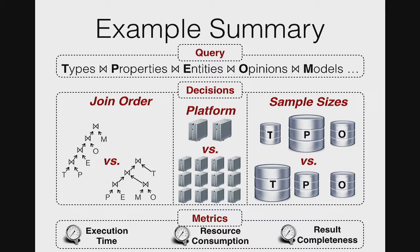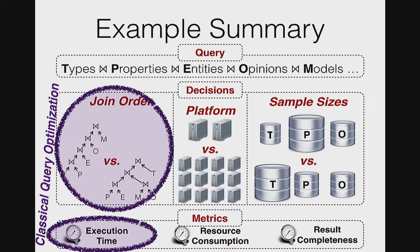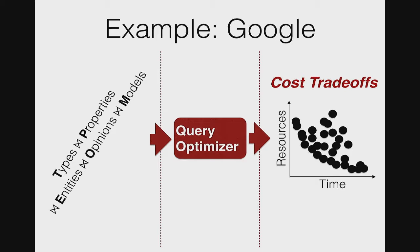This scenario already corresponds to a significant extension of classical query optimization, which is mostly about join order and execution time. I had to make those decisions by hand at Google in a trial-and-error fashion, and it often took more time than I would have liked. It would have been good to have a query optimizer tool that takes the query as input and generates a visualization of the different cost trade-offs — specifically the Pareto optimal cost trade-offs, also called the Pareto frontier. A cost trade-off is Pareto optimal if no alternative is better according to all cost metrics. Having those optimal trade-offs would have been very helpful in this scenario.